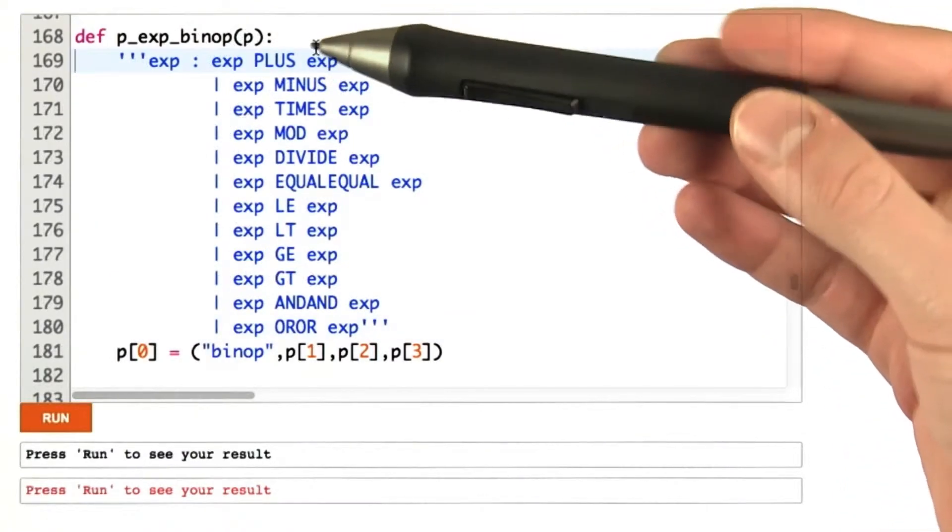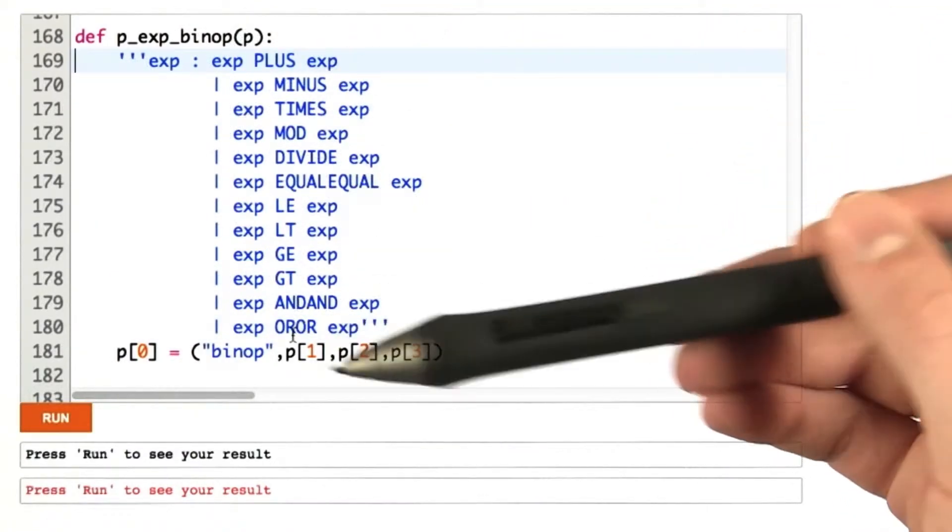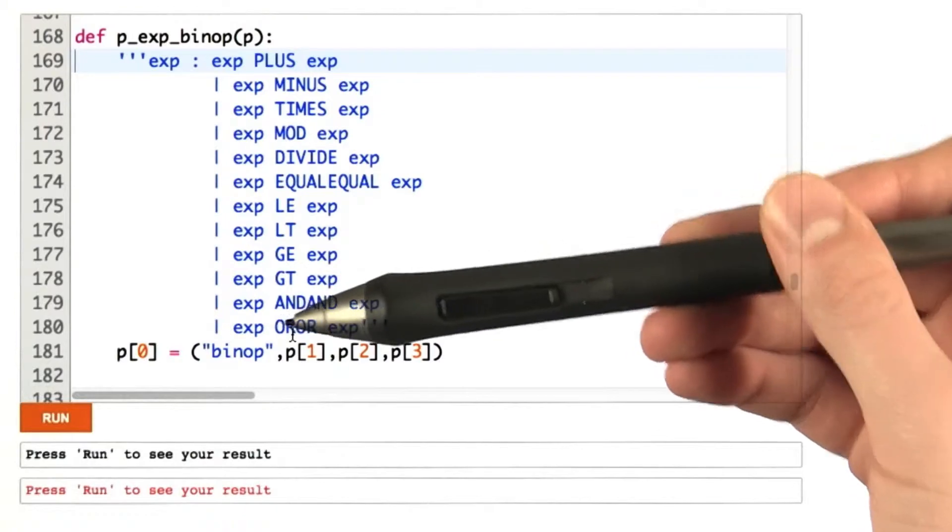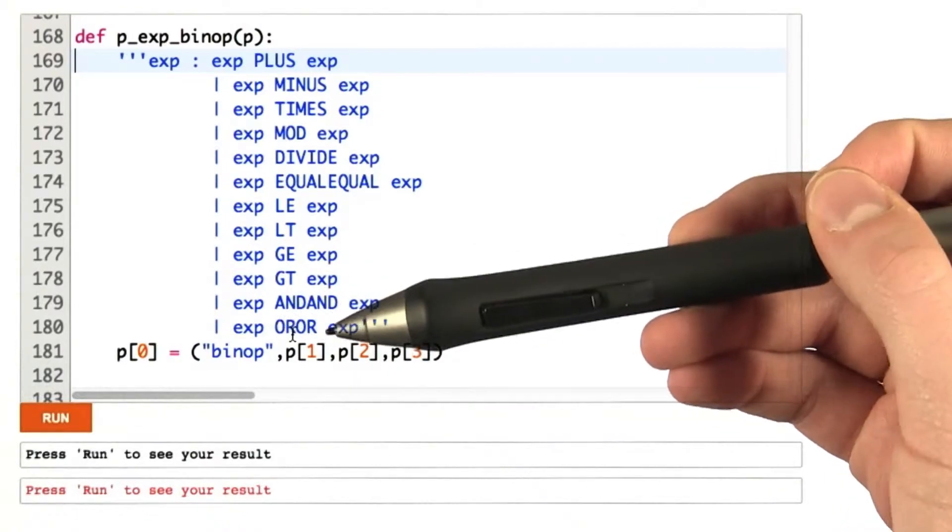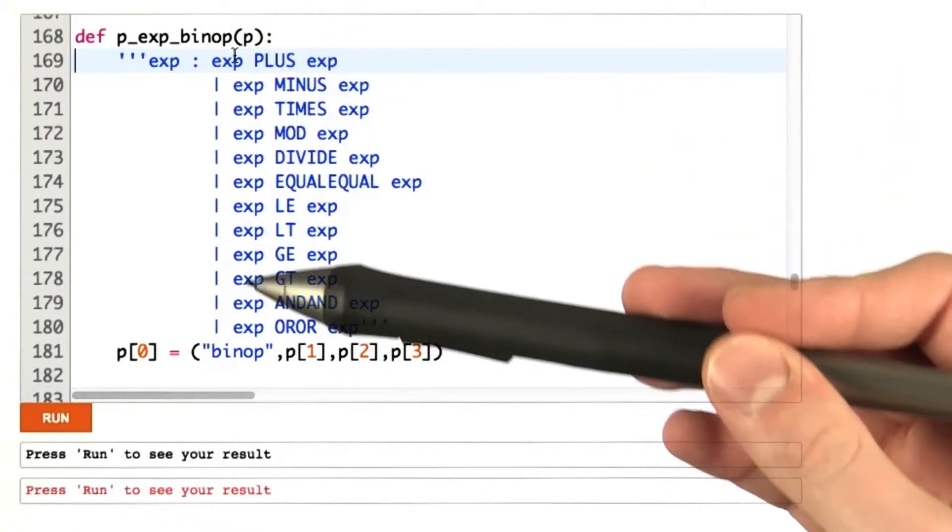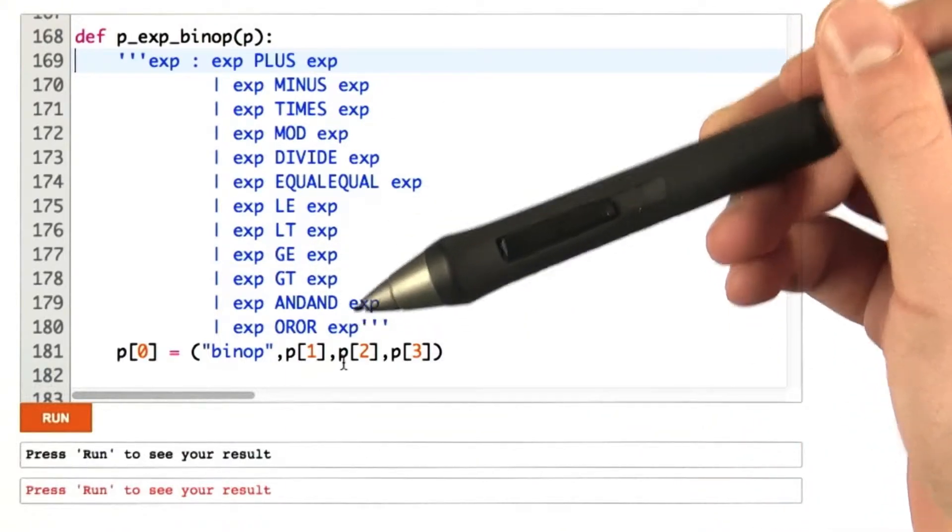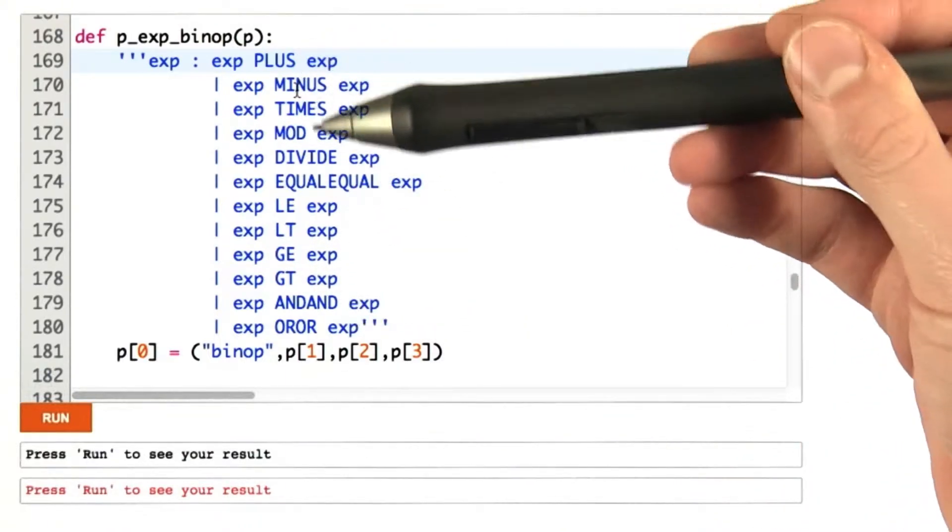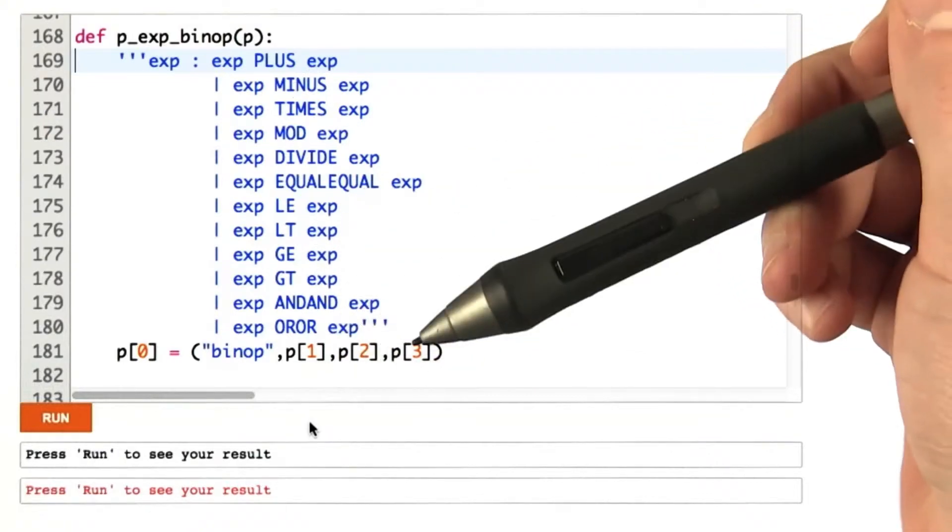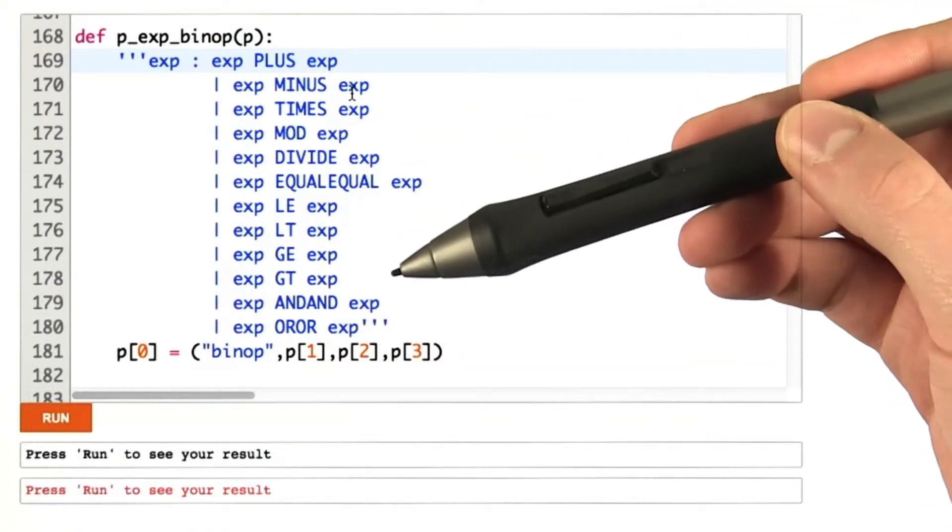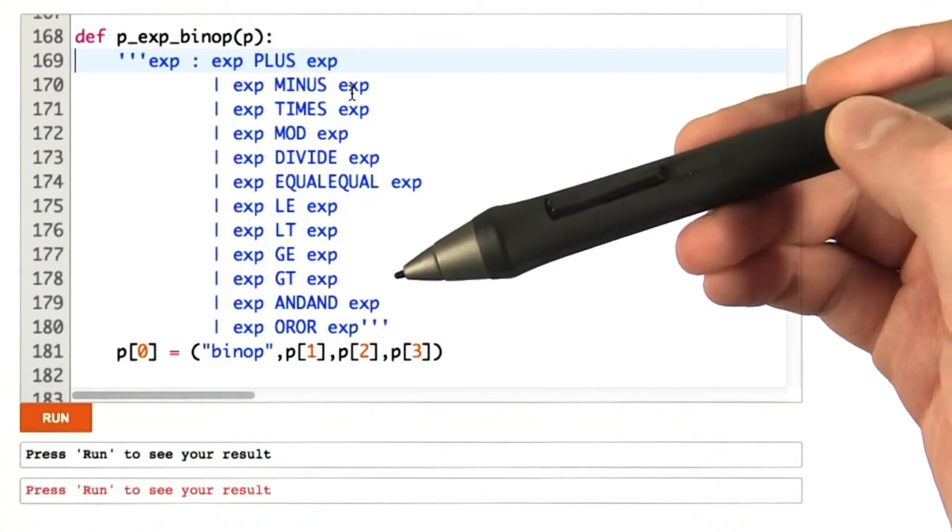So here, I've said if we match any of these things, I'm calling it a binary operation, where the first element is the left operand of the binary operation. The next entry in our tuple is going to be the operation being used, and the last one is going to be the right operand of the binary operation.